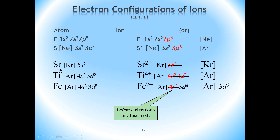Let's start with strontium. This is the electronic configuration of strontium, the abbreviated version. To form the strontium 2+ ion, we simply remove the two electrons from the 5s sub-level, which means that the 5s sub-level disappears, and therefore the electron configuration will be the same as that of krypton. Now for titanium — this is the electronic configuration of titanium, abbreviated. We start removing electrons from the fourth shell, which contains the 4s sub-level. To write the electron configuration of Ti4+, we remove those two electrons, and then the next two from the 3d sub-level, giving the electron configuration of argon.